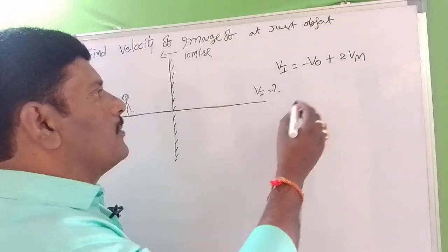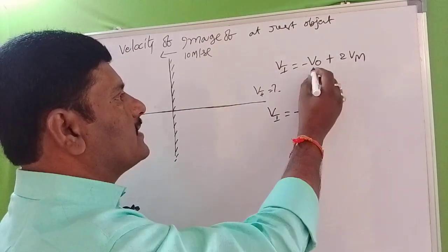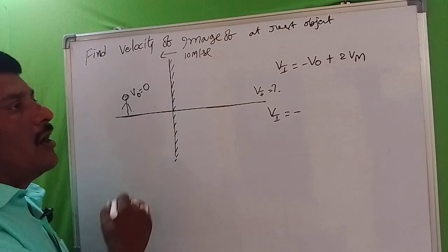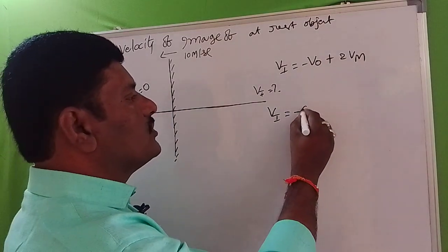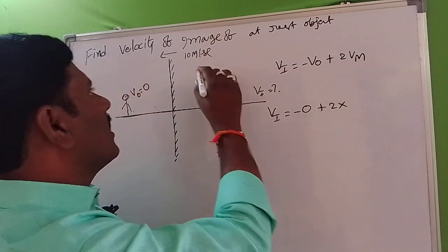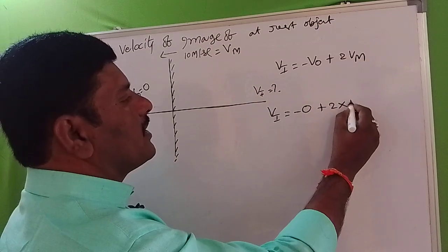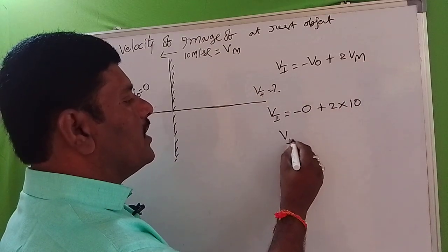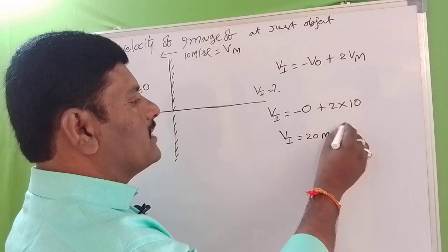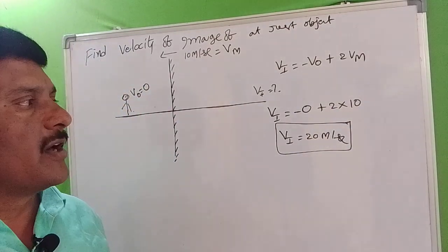So we can apply this formula. If the object is at rest, V0 equals zero. Plus 2 into Vm — the velocity of the mirror equals 10 meters per second. Therefore Vi equals 20 meters per second for the image.